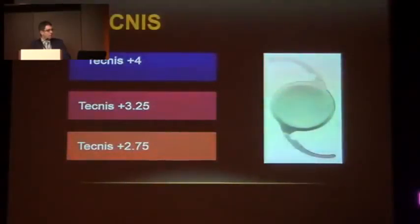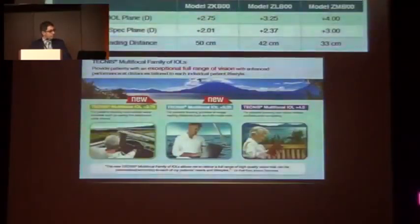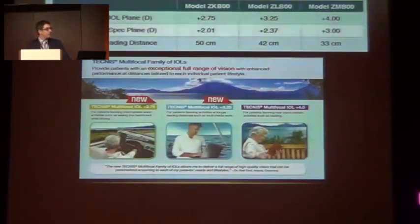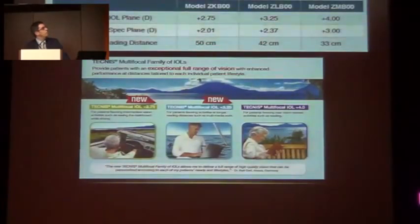We have three different addition options: plus 4, plus 3.25, and plus 2.75. These models are called ZB, with a theoretical medium distance of 50 centimeters; the ZLB, with a theoretical medium distance of 42 centimeters; and the classic ZMB, to read at 33 centimeters.